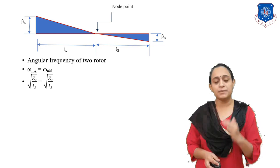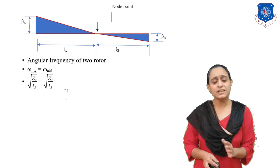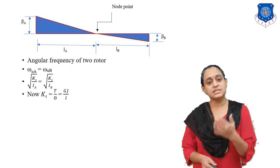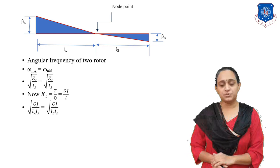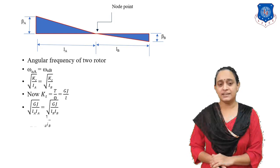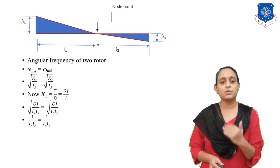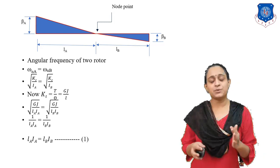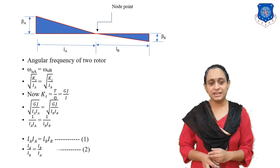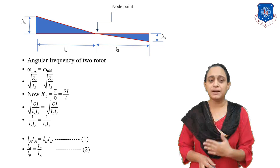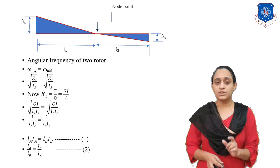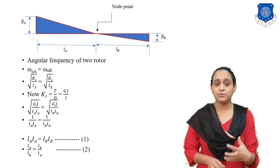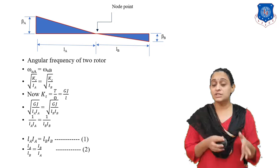Let us put the values of KT. KT is T by theta, which equals GJ by L. By putting these values we finally get: 1 upon L_A I_A is equal to 1 upon L_B I_B, so we can write L_A I_A equals L_B I_B. Finally we get L_A by L_B equals I_B by I_A. This is the two-rotor single node position equation.